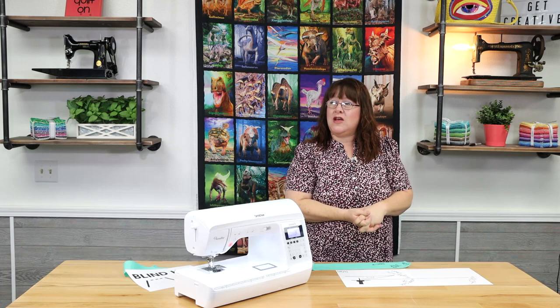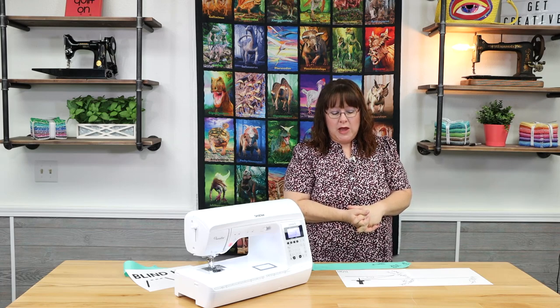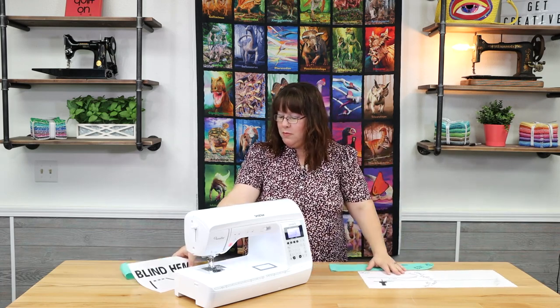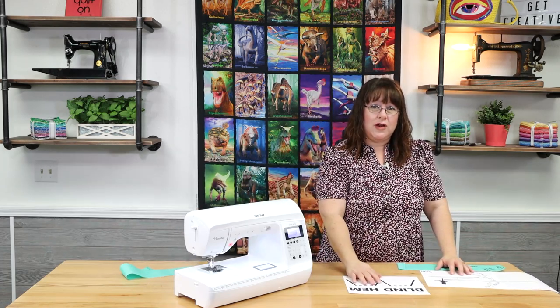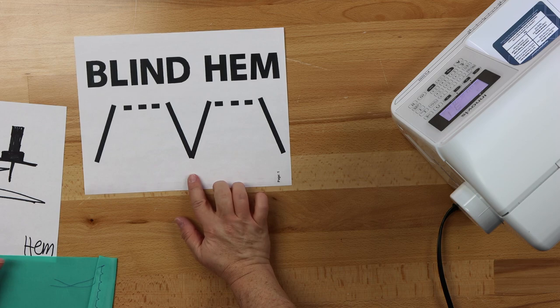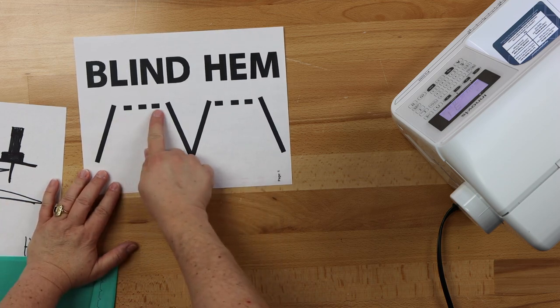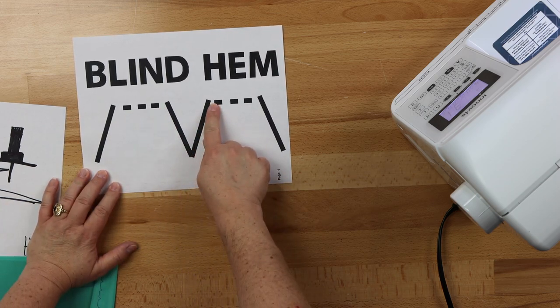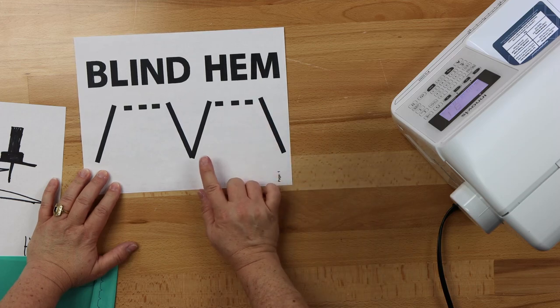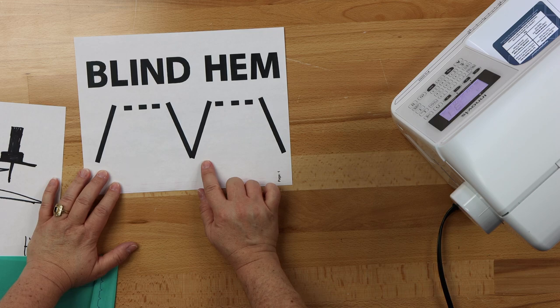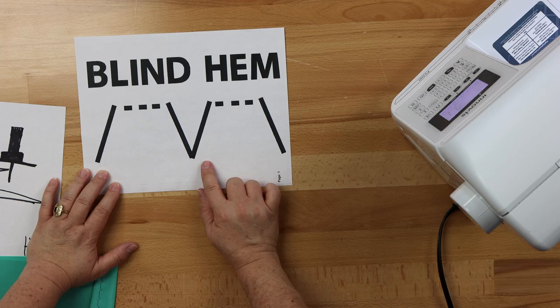What stitch do you use on the machine? It's actually a blind hem stitch. So let me grab this one back. Every machine has it in a different place and has a different number. Remember, this is what it looks like. So you have dots and then a mountain, inside mountain. More dots and then an inside mountain. So this is what the stitch looks like when you're selecting it on your machine. It's called a blind hem stitch.